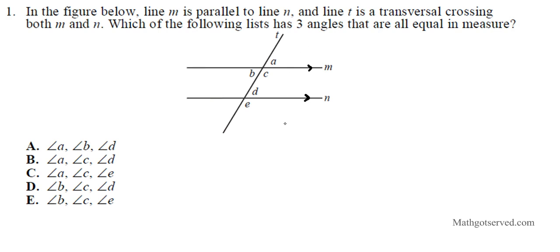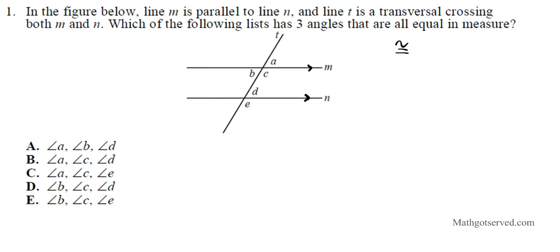Whenever you have two parallel lines cut by a transversal, you have a very special relationship between each pair of angles. Either they are congruent, or they are going to be supplementary. Either they are congruent or supplementary. Supplementary basically means they add up to 180.